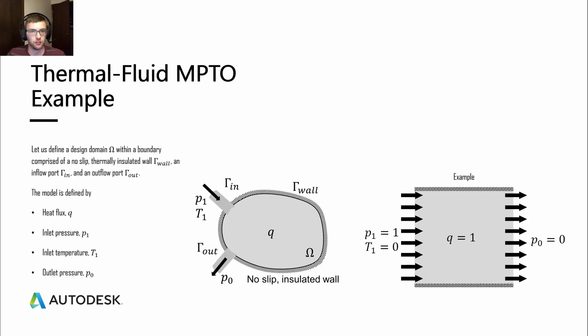We can apply the thermal fluid multiphysics topology optimization problem to this example that we have here. We will start with the design domain omega. It is surrounded by this no-slip insulated wall with the exception of along that wall, we have this inlet and outlet. The inlet's defined with a pressure and a temperature, and the outlet's defined with just a pressure. So this is a pressure-driven flow. Over the design domain, we have a flux, a heat flux. Looking at our example here on the right, we have an inlet on the left, a uniform inlet with a pressure and a temperature of one and zero respectively. We have an outlet on the right with a pressure of zero, and then we have a flux over the whole thing.